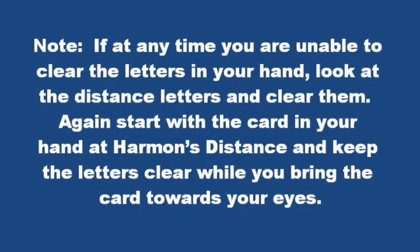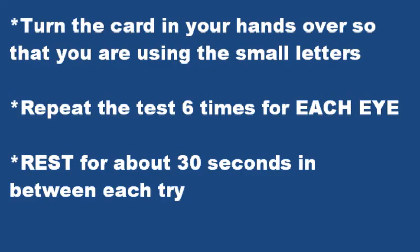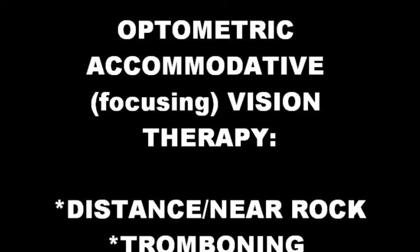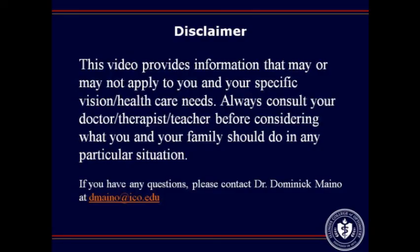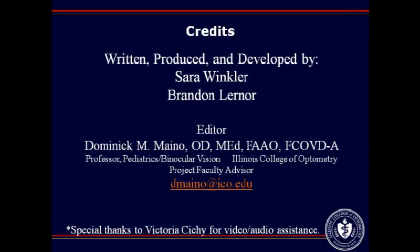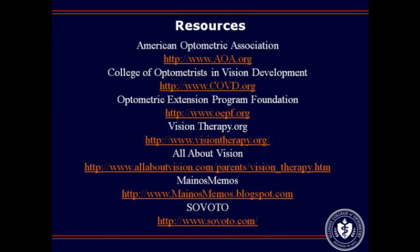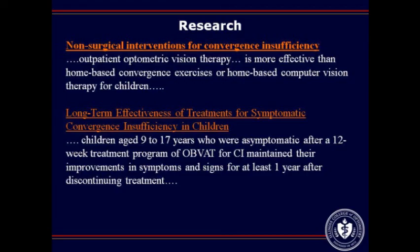If at any time you are unable to clear the letters in your hand, look at the distance letters and clear those, then repeat starting with the card in your hand at Harmon's distance. To make this method more challenging, use the small letters on the handheld chart. Repeat the technique six times for each eye with 30 seconds of rest each try. You now have all the information you need to work on and improve your accommodative range and speed. Remember, efficient accommodative skills are important for performing near tasks like reading and writing. Good luck!